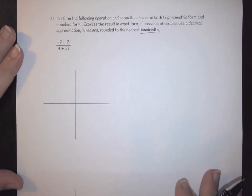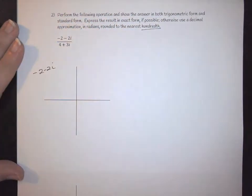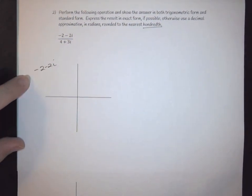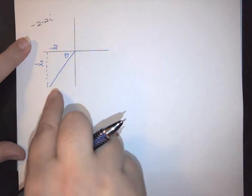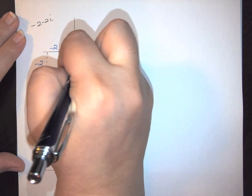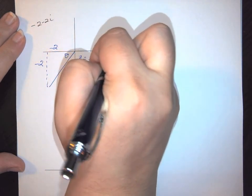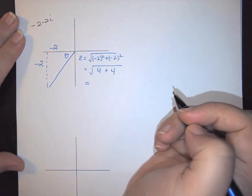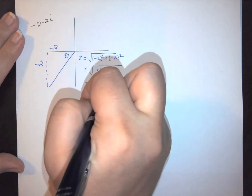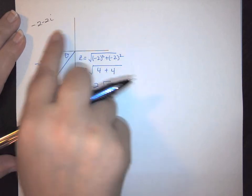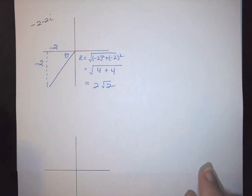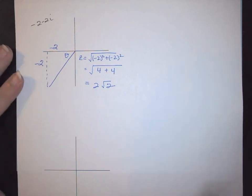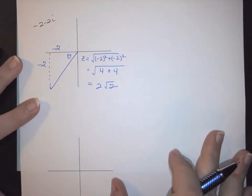Let's start with the top: we have negative 2 minus 2i. Both x and y are negative, so again we're going to be in the third quadrant. Here is our angle. We're going to have negative 2, negative 2, and then we need to find our z value. So z is equal to the square root of negative 2 squared plus negative 2 squared. Since this triangle cannot be found on the unit circle, we can go ahead and use the ideas of tangent.